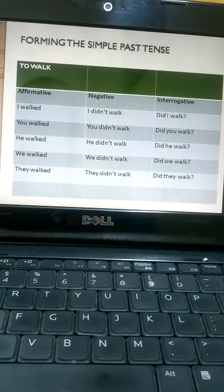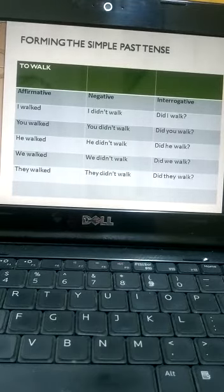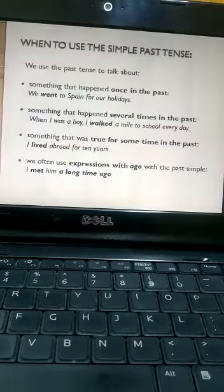For interrogative sentences, we use 'did' as an auxiliary form and start our sentence with 'did'. Now, when to use the simple past tense? Situation number one: we use the past simple to talk about something that happened only once in the past.